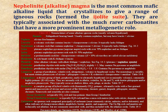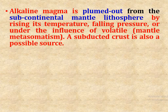Pantelirite, lamprophyre, kimberlite, and carbonatite are also important alkaline rock types. Alkaline magma is pulled out from the subcontinental mantle lithosphere by rising temperature, falling pressure, or under the influence of volatile metasomatism. A subducted crust is also a possible source.